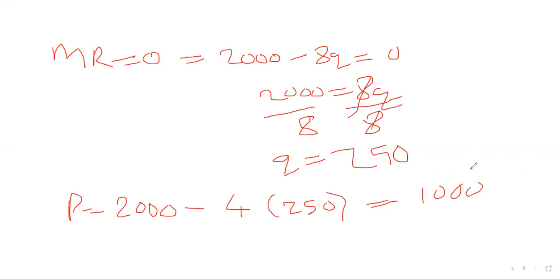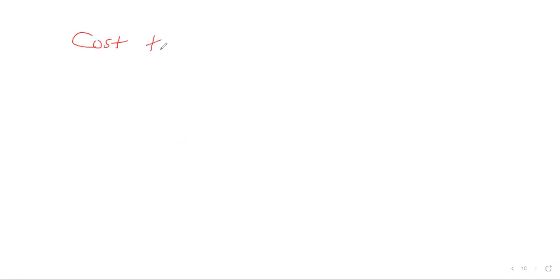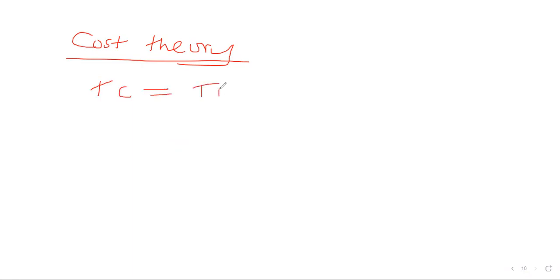This is how we optimize — this is what we do when we're optimizing. Now let's go to cost theory. Under cost theory, you must understand that the total cost is a combination of the total fixed cost plus the total variable cost.